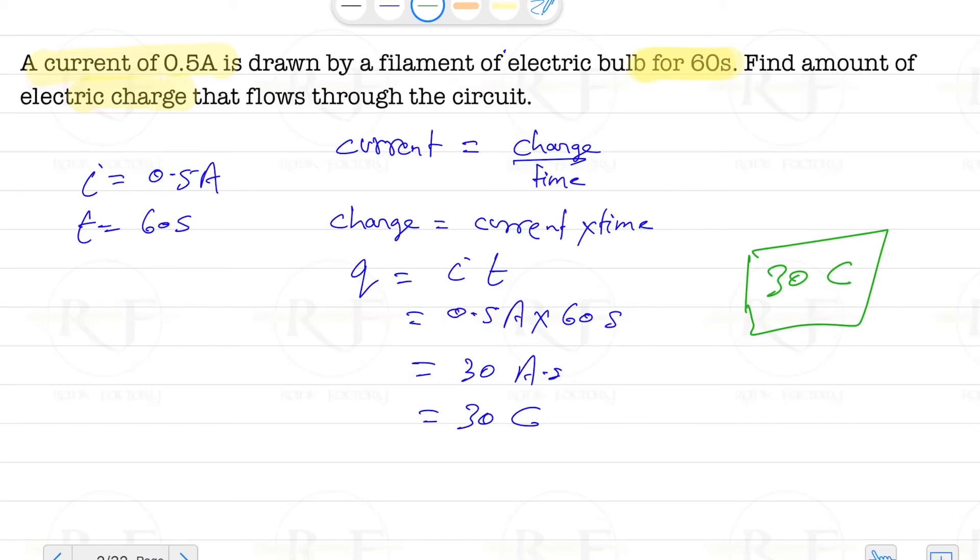our final answer. Remember, when you get a question like this to find out amount of charge with the help of given current and time, you need to multiply the value of current with the value of time.